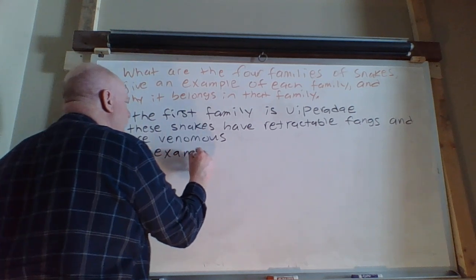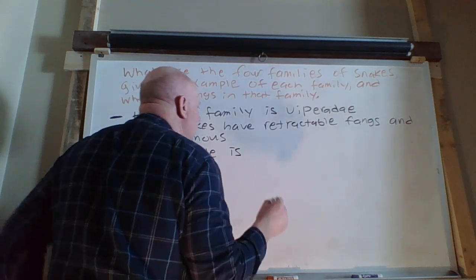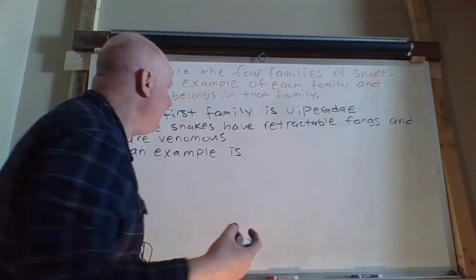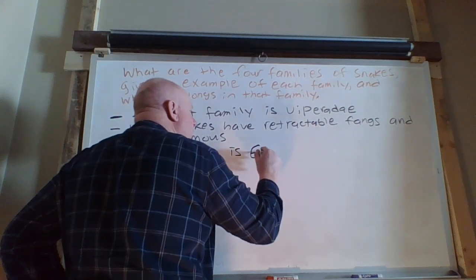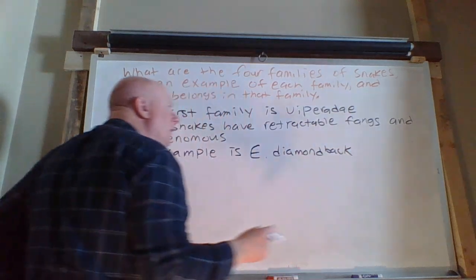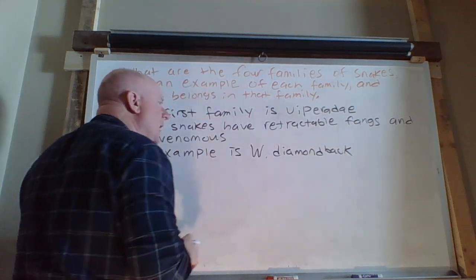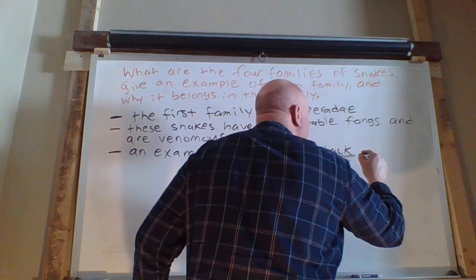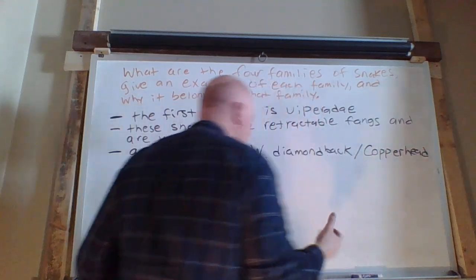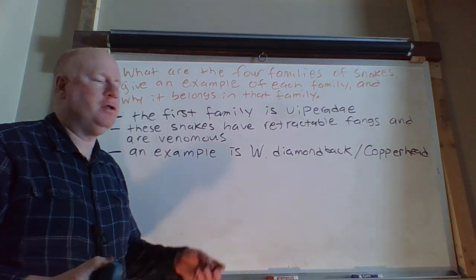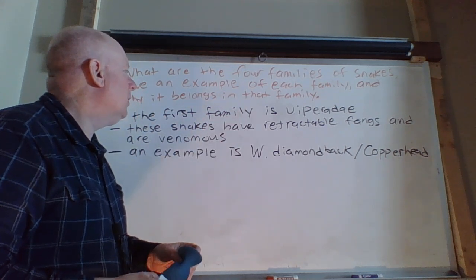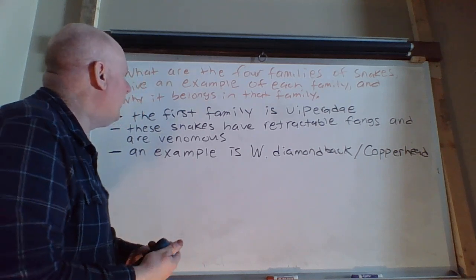An example is anything from a copperhead. If we're going to say a rattlesnake, we want you to be a little more specific with that. You could say Eastern diamondback. If you don't want Eastern, you can do a Western diamondback. You could also say copperhead and a water moccasin. So those are three examples you could use for snakes in the family Viparidae. That is our first family.